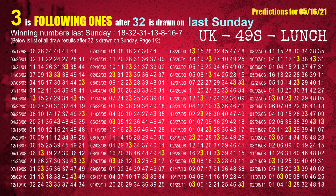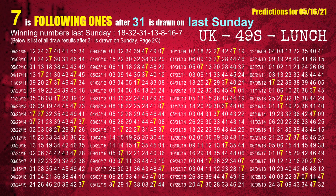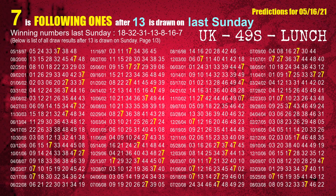The second winning number last Sunday is 32. The most frequently following units digit is 3 when 32 is the winning number on last Sunday. The third winning number last Sunday is 31. The most frequently following units digit is 7 when 31 is the winning number on last Sunday. The fourth winning number last Sunday is 13. The most frequently following units digit is 7 when 13 is the winning number on last Sunday.